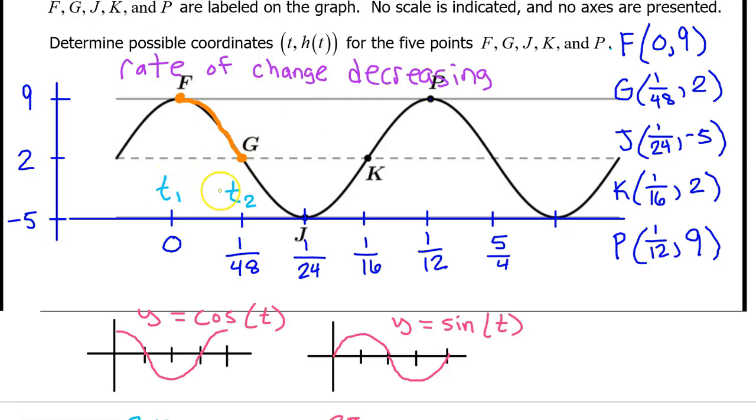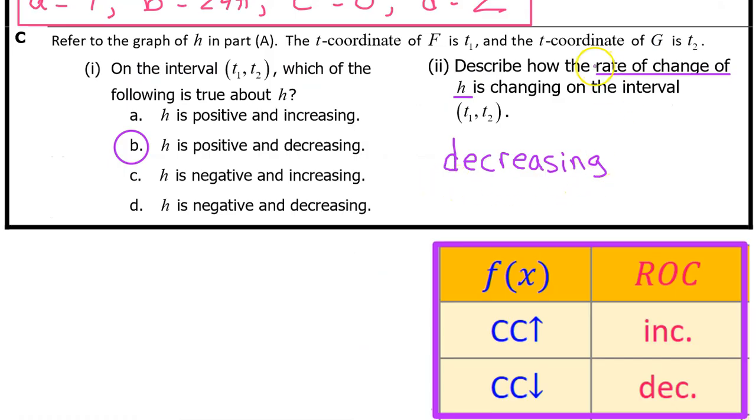On the interval from t1 to t2, h(t) is concave down, therefore the rate of change is decreasing. This describes how the rate of change of h is changing on the interval from t1 to t2. It's safest to answer with a single word. Just say decreasing.